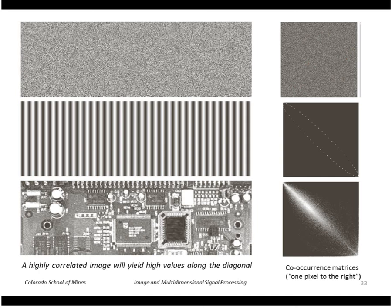However, if we have a highly correlated image like this, then a pixel intensity, here we're considering one pixel to the right, is very similar to its neighbor. So we should expect values along the diagonal. In this case, we have a sinusoidal type variation, so they're actually displaced from the diagonal a little bit, as you can see here.